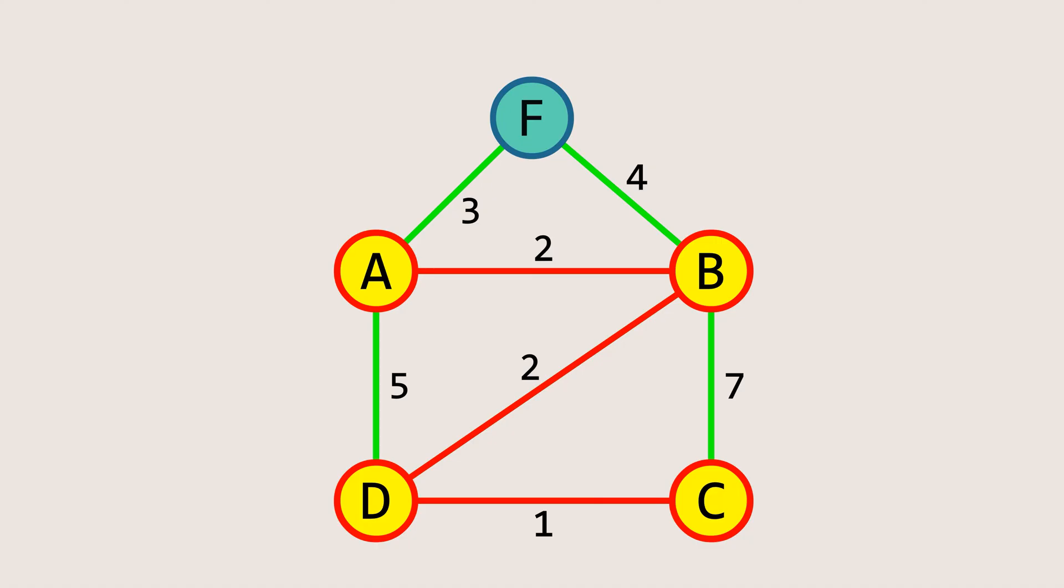We again select the edge with the minimum weight. It's the edge AF with a weight of 3, so we add it to our spanning tree. With this addition, all the nodes are now connected, and the algorithm stops.